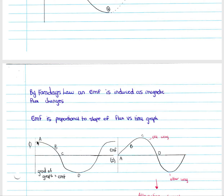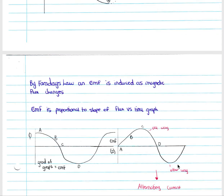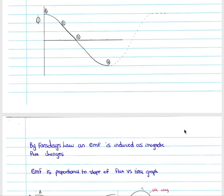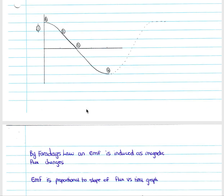At point a, the gradient of the flux graph is zero, so EMF is zero. Towards point b, the gradient increases, so EMF increases. At point c, the gradient is at its largest — this is maximum EMF. EMF then decreases to point d, which is another maximum but in the opposite direction — below the x-axis. This is evidence of alternating current, which is why we call this the alternating current generator: the direction of current in the coil alternates every 180 degrees.